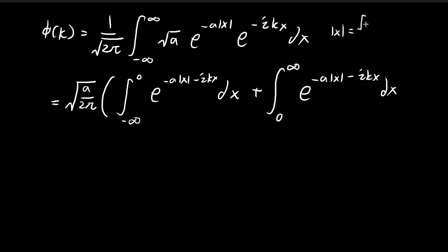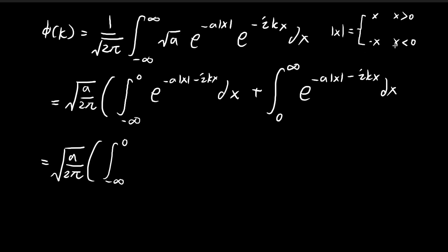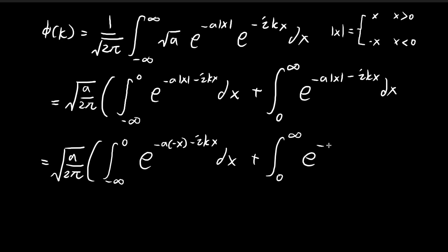Recall the definition of absolute value: |x| = x when x > 0, and |x| = −x when x < 0. For example, the absolute value of −1 equals 1, which equals −(−1). So in the region from negative infinity to 0, where x < 0, we replace |x| with −x, giving the exponent (a − ik)x. In the region from 0 to infinity, where x > 0, |x| = x, so the exponent becomes (−a − ik)x.